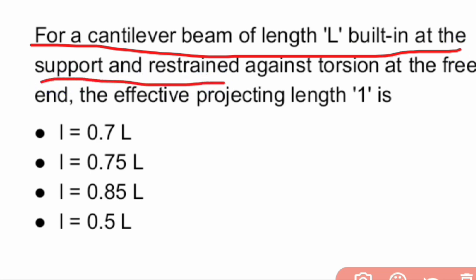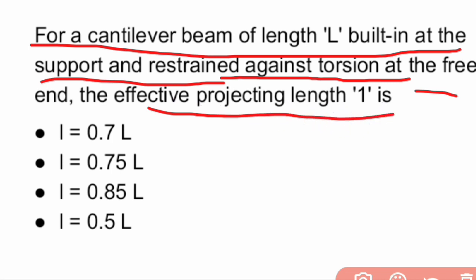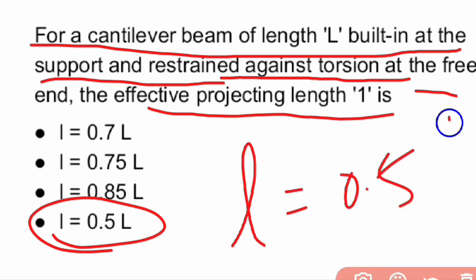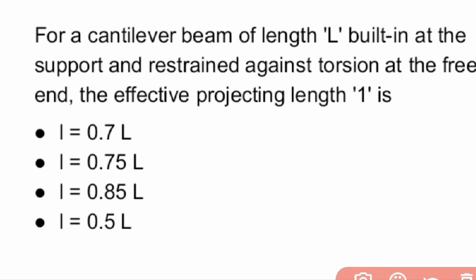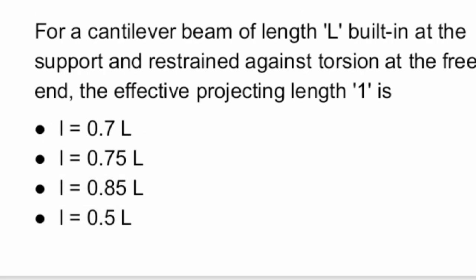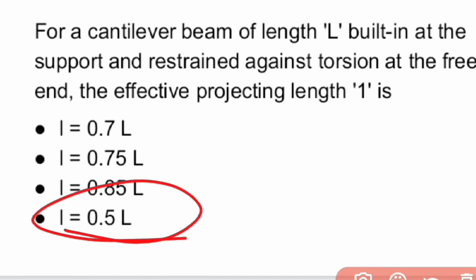Next question: for a cantilever beam of length L, built in at the support and restrained against torsion at the free end, what is the effective projecting length? The effective length is L equals 0.5L.